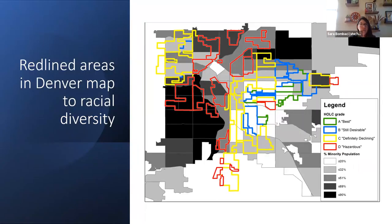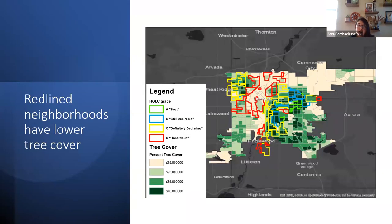Red-lined areas in Denver do map to racial diversity — census polygons with a higher proportion of minority populations are distributed more heavily in redlined areas as opposed to green or blue-lined areas. Additionally, red-lined neighborhoods have lower tree cover in Denver. Looking at red-lined neighborhoods, the percent tree cover is less than 15% for many census tracts, while green-lined and blue-lined neighborhoods have tree cover up to almost 70%.